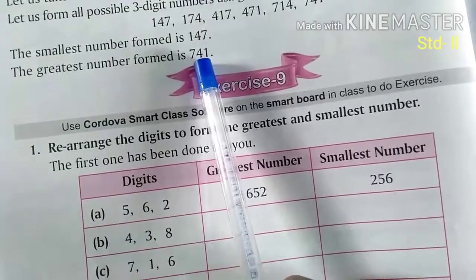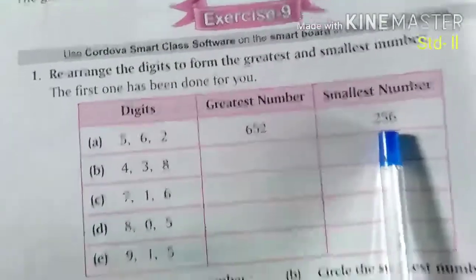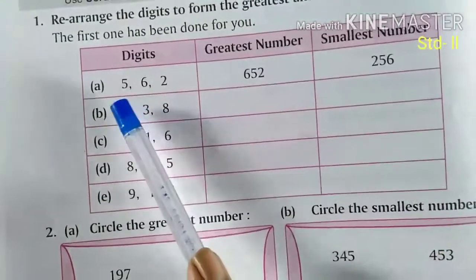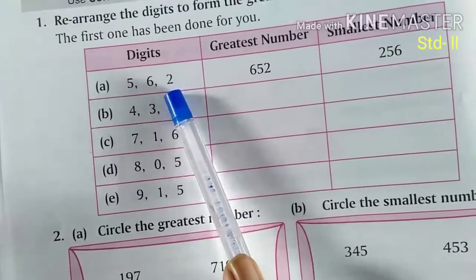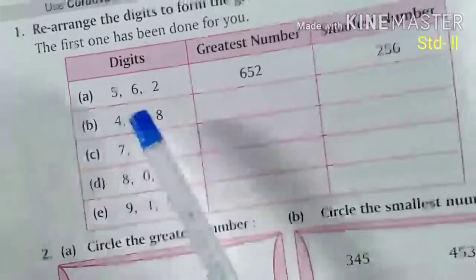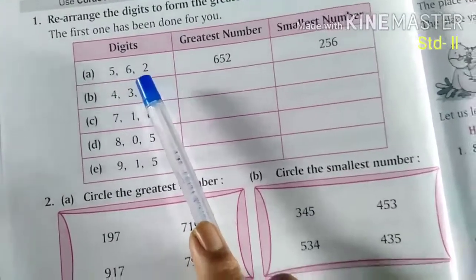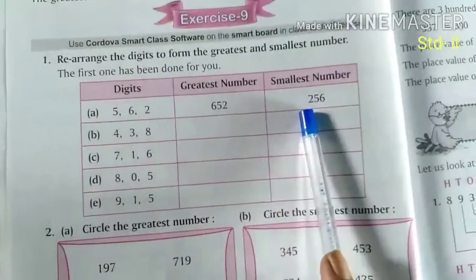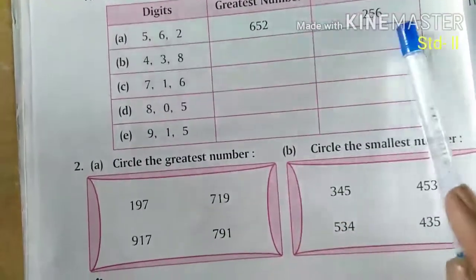number. In the same way, we are going to solve this table. How will you do that? See, 3 digits are given here: 5, 6, 2. Now what will be the smallest number? Smallest number will start with the smallest number. So which number is small? 2. 2 will come here in hundreds place, 5 will come in tens place and 6. So this is the